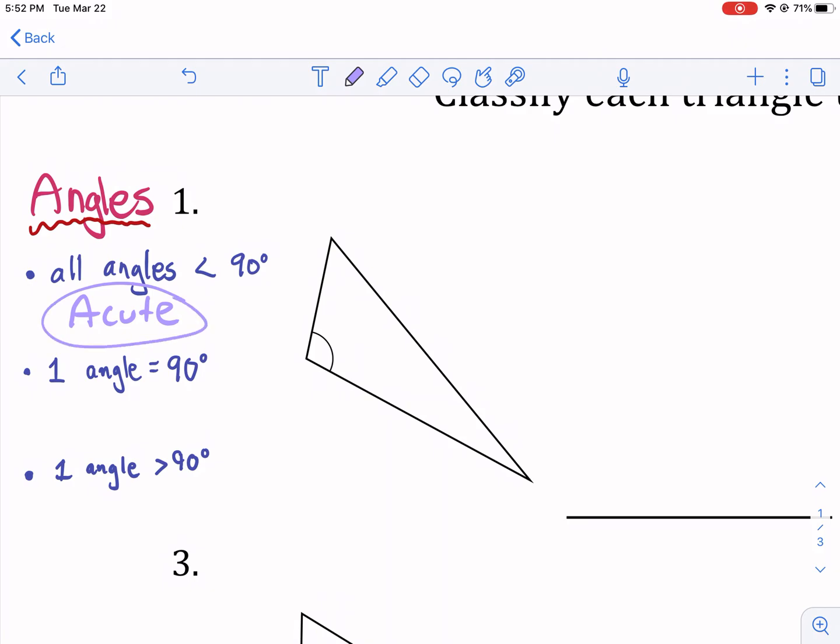If one of the angles, it just has to be one, it's actually impossible for it to have two, has a right angle or 90 degree angle, then it is right. So if it has one right angle, it's a right triangle.